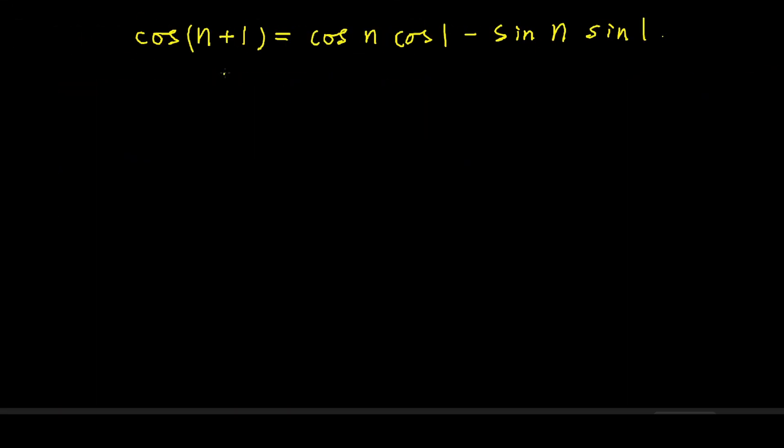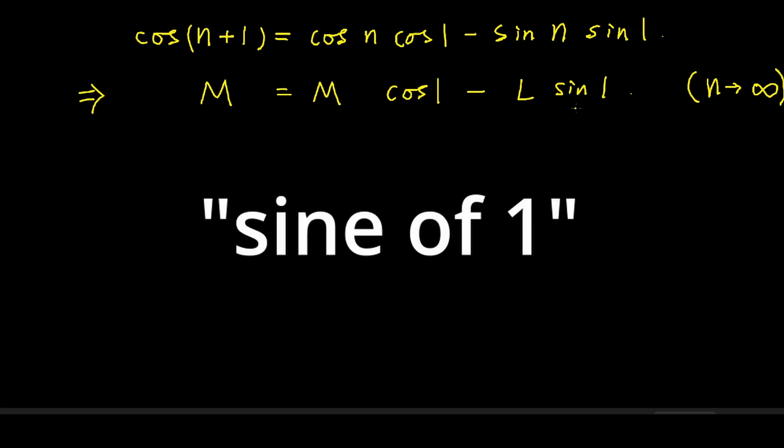That is, the cosine of n plus 1 equals cosine of n times cosine of 1 minus sine of n times sine of 1. By taking limits on both sides, we get M equals M times cosine of 1 minus L times sine of 1.